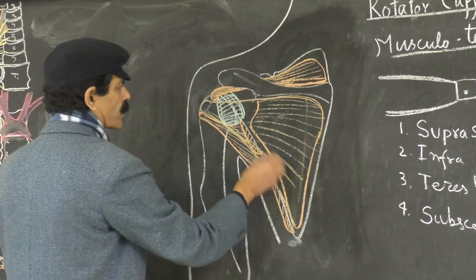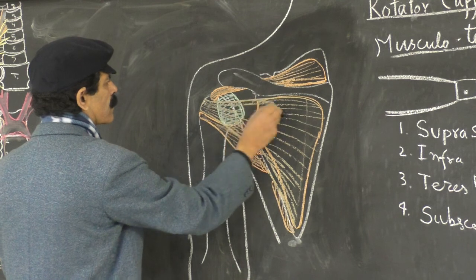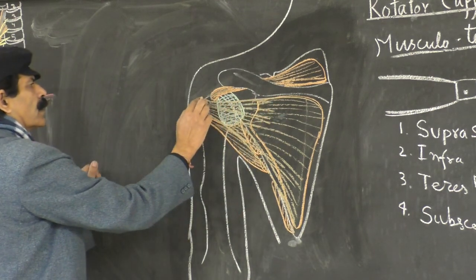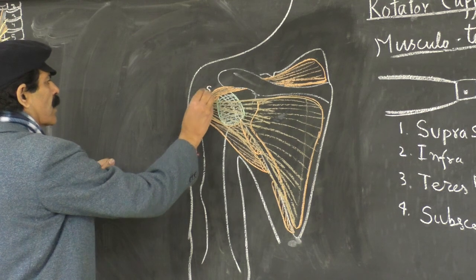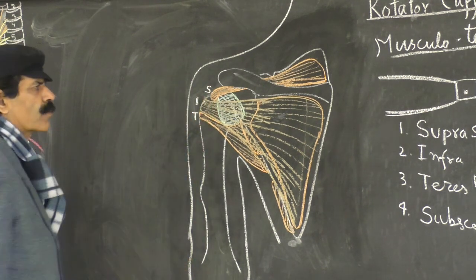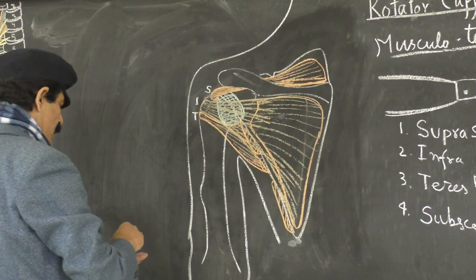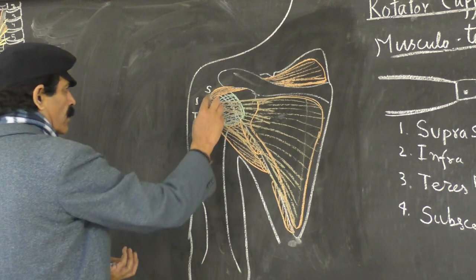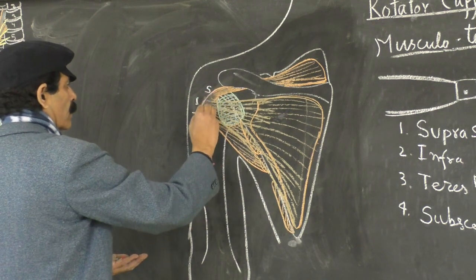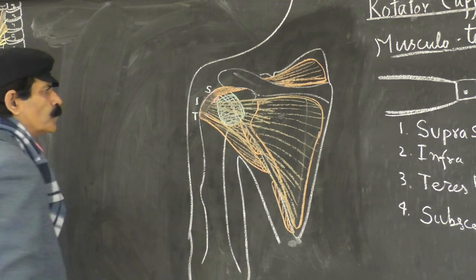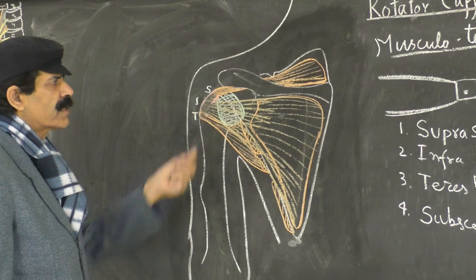The infraspinatus muscle, taking origin from a wide area of the infraspinous fossa, is inserted on a very narrow space on the greater tubercle. As we know, the origin is wide but as the muscles go near the insertion they become very narrow. Their tendons are aponeurotic and they almost fuse together, and in their fusion they form a rotator cuff. They grip over the head of the humerus and keep it in contact with the glenoid cavity in all movements, thereby stabilizing the shoulder joint.